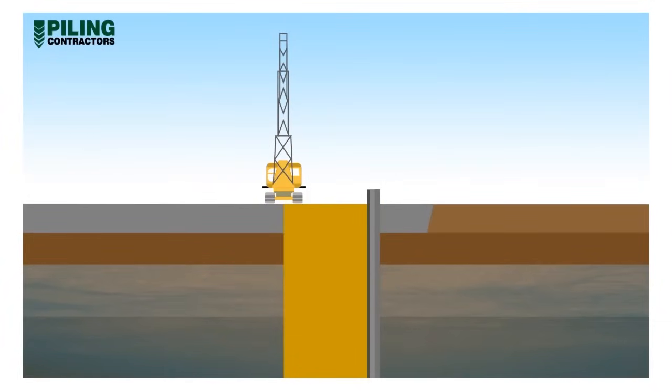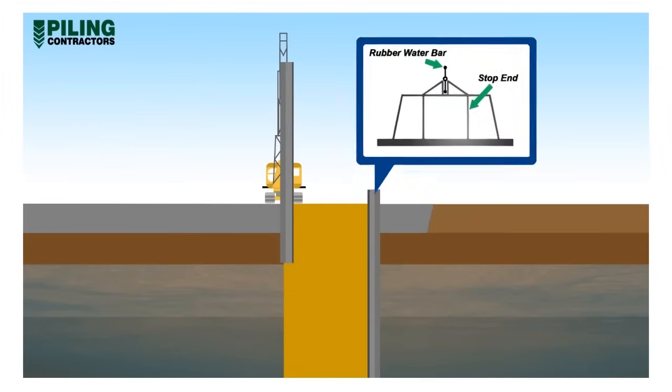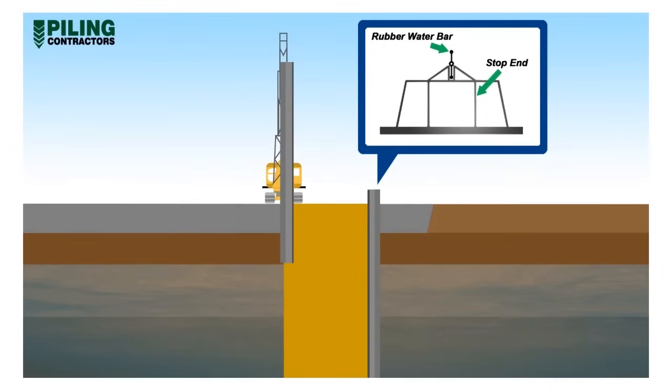Steel or precast concrete stop ends are placed at the edges of the excavated panel. The stop end may contain a rubber water bar that later becomes embedded into the concrete. The water bar minimises water ingress between panel joints once the earth is excavated inside the diaphragm wall.